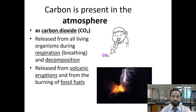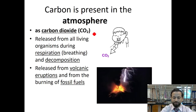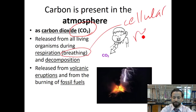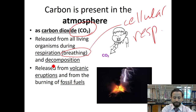Let's start with where we can find carbon. Carbon can be found in the atmosphere and it is found in the form of carbon dioxide, CO2. It is released from all living organisms during respiration — meaning breathing, not cellular respiration — and decomposition. It's also released from volcanic eruptions and from burning fossil fuels.